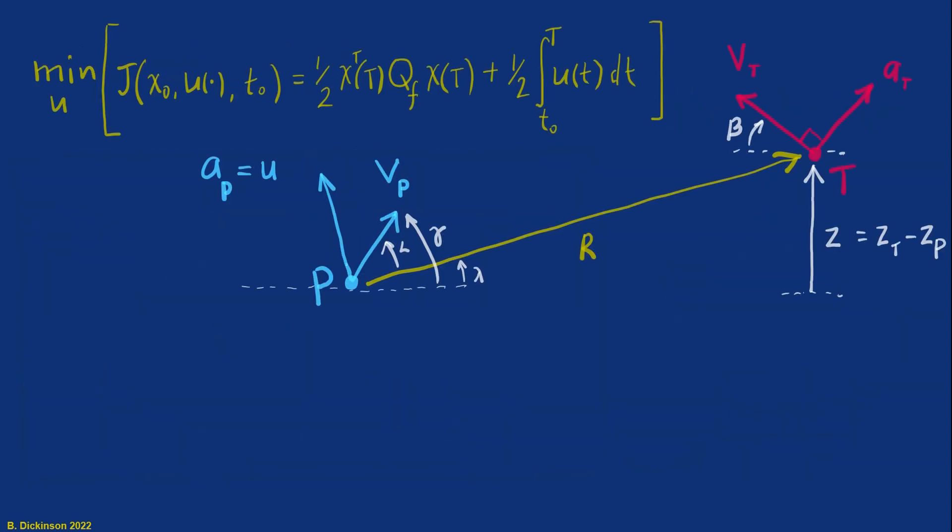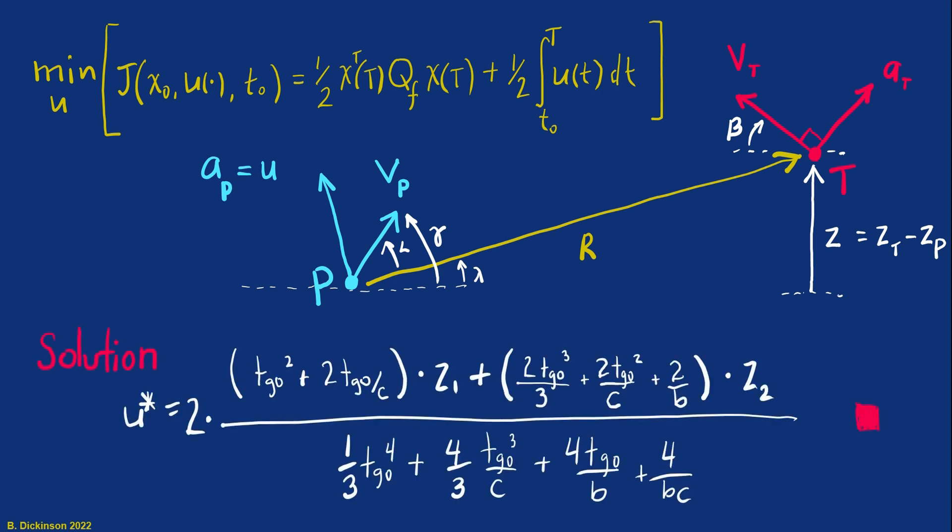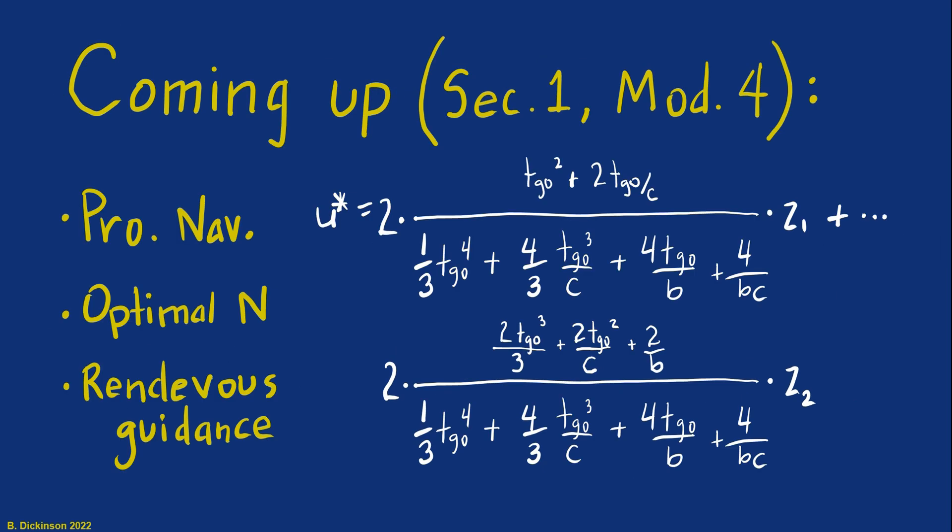To wrap this all up, we sought out to minimize the performance index constrained by the engagement kinematics. We applied linear quadratic control theory to determine the optimal control. Now, going forward in module four, we're going to work with this optimal control solution to determine pronav, the optimal gain for intercept, and something called rendezvous guidance.